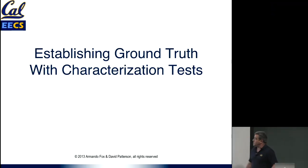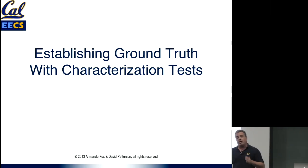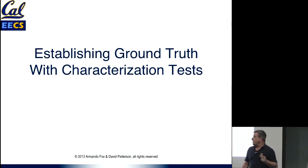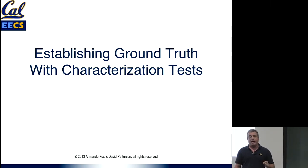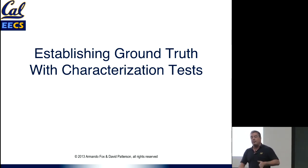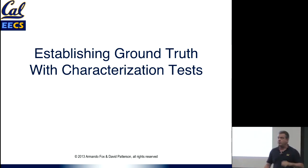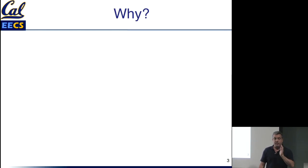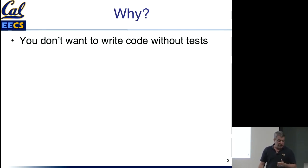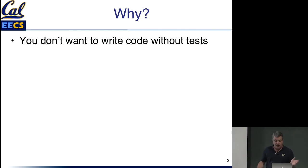The first topic is this idea of characterization tests. If you ever read one single book on legacy code, it should be 'Working Effectively with Legacy Code' by Michael Feathers. A lot of the ideas in this course are adapted from that book, shamelessly so. And in particular, the idea of characterization tests. The motivation here is we've always said that code without tests is bad.